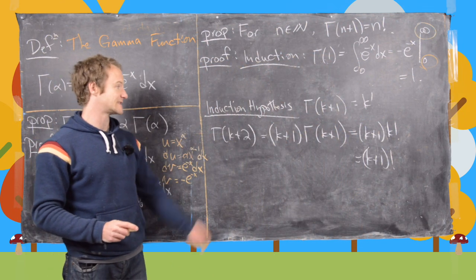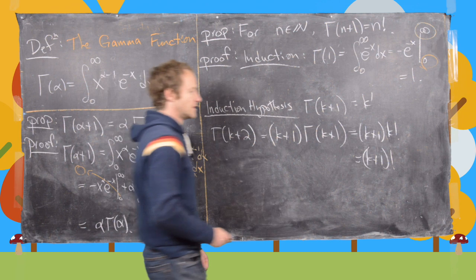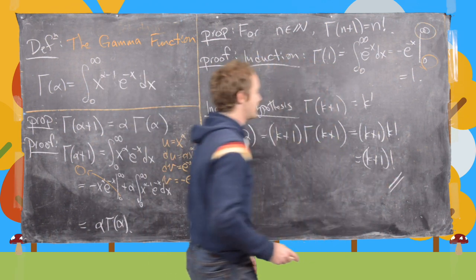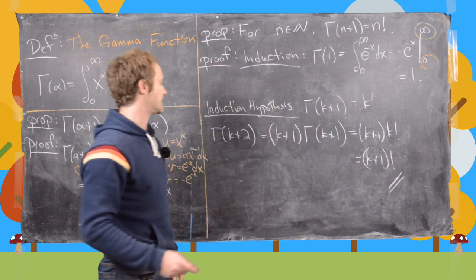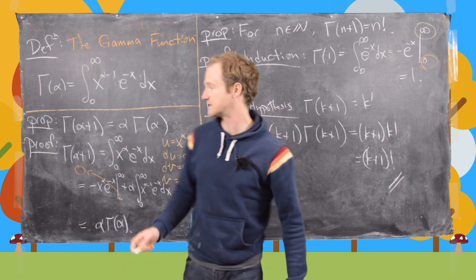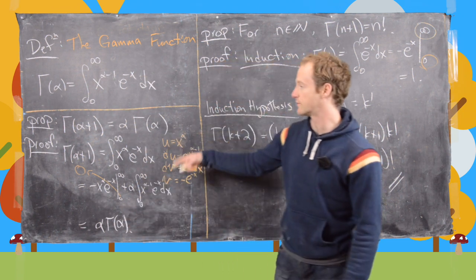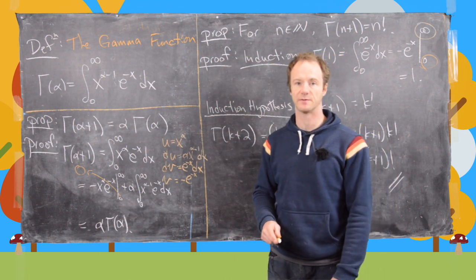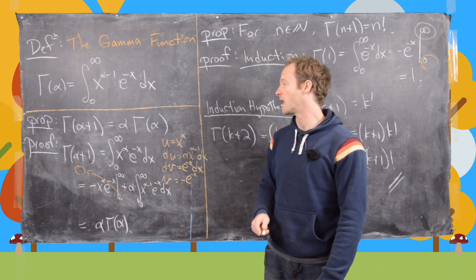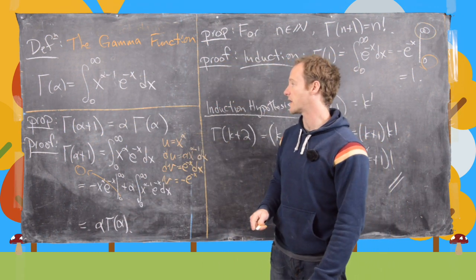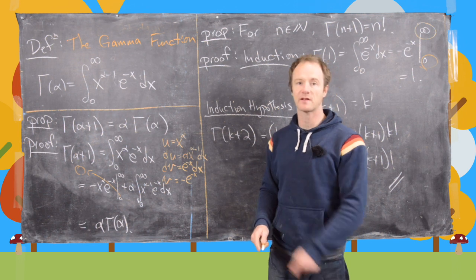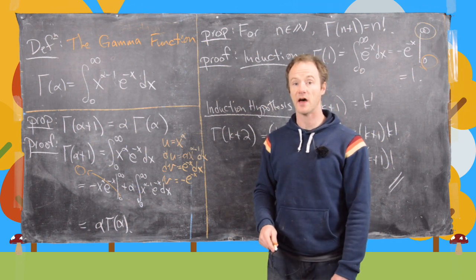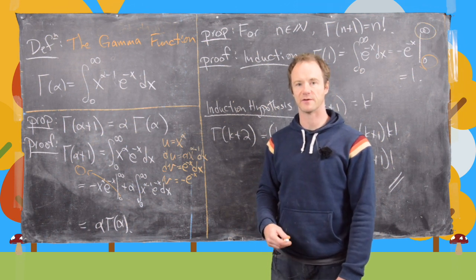That concludes the proof. Notice we didn't need to go back to the definition of the gamma function in the induction step, because we had already proved the recursive property. Now let's look at another value of the gamma function.